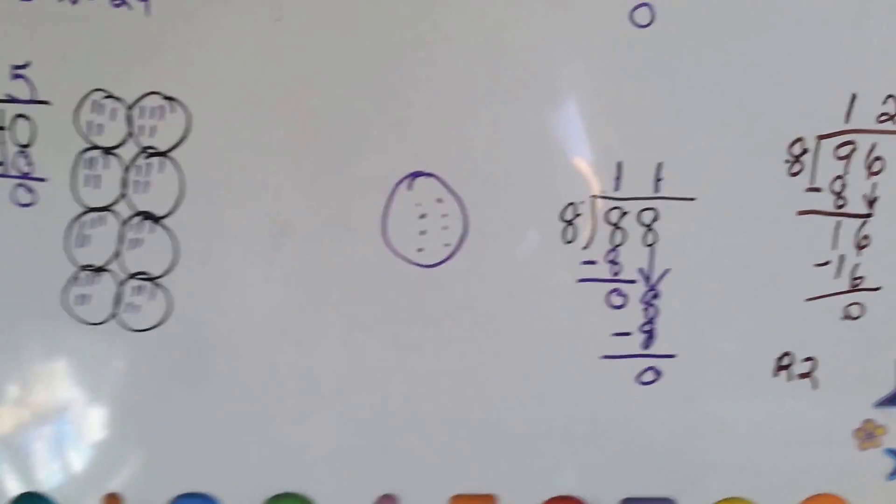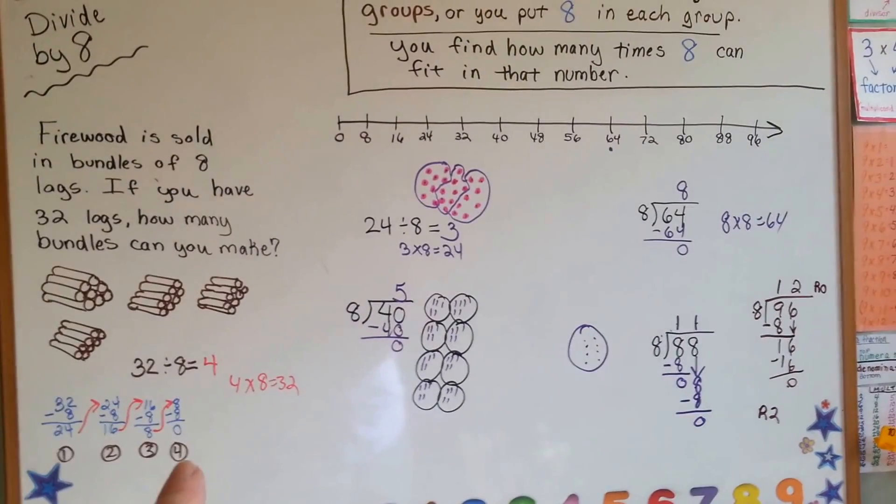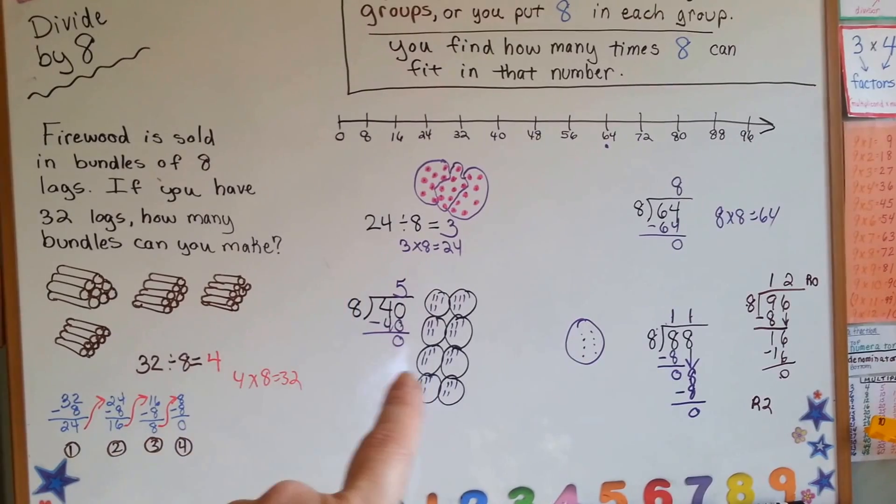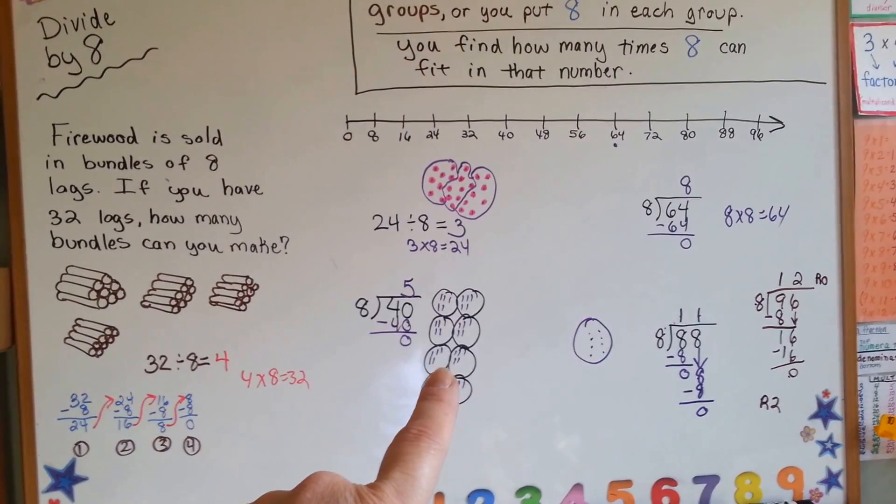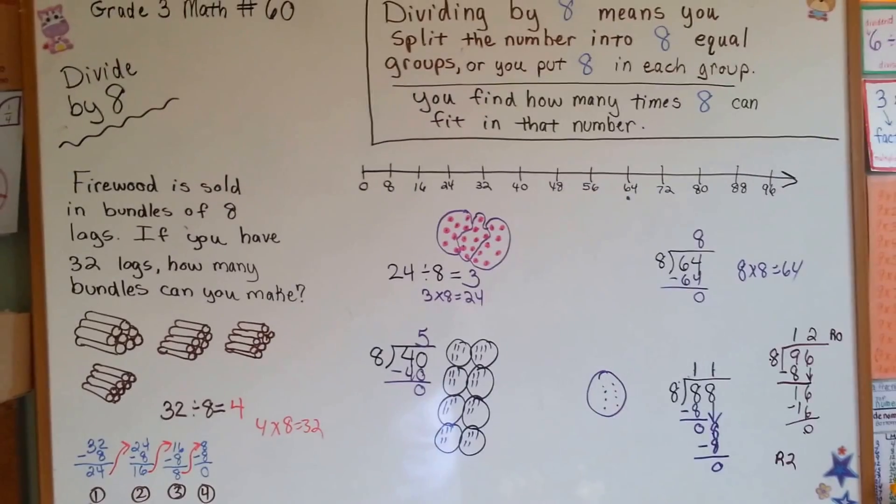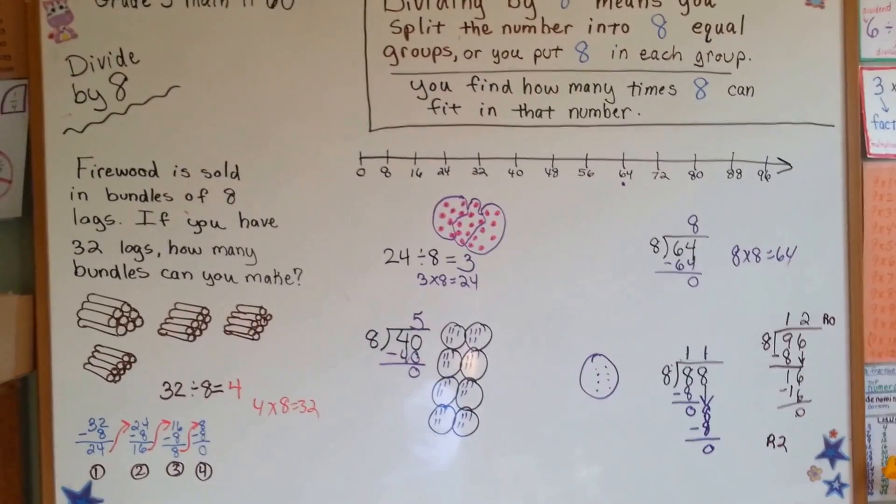For right now, this is dividing by 8. These are the different methods: you could use subtraction, you could use circling dots, you could use filling in dots in a group, or you could use skip counting. Keep up with the times table. Keep trying to memorize them. I'll see you next video.